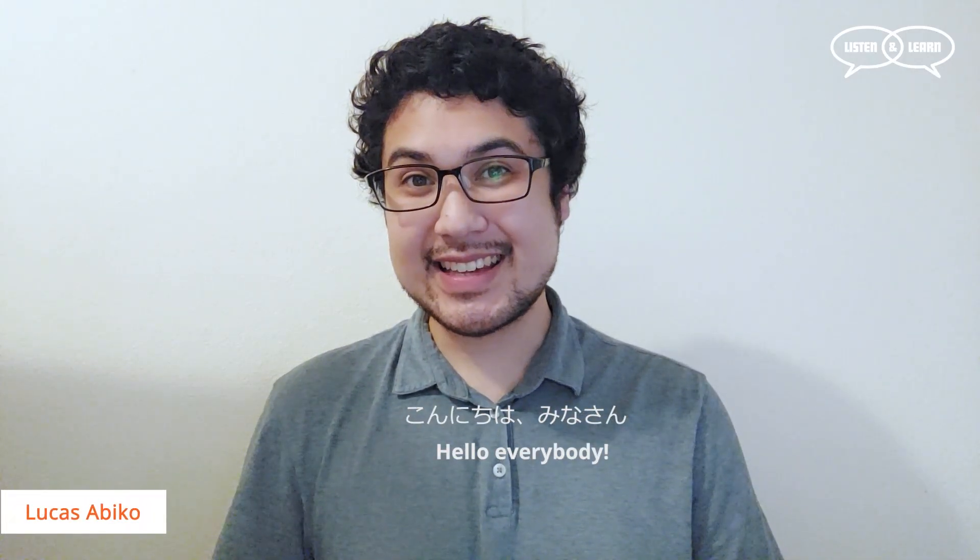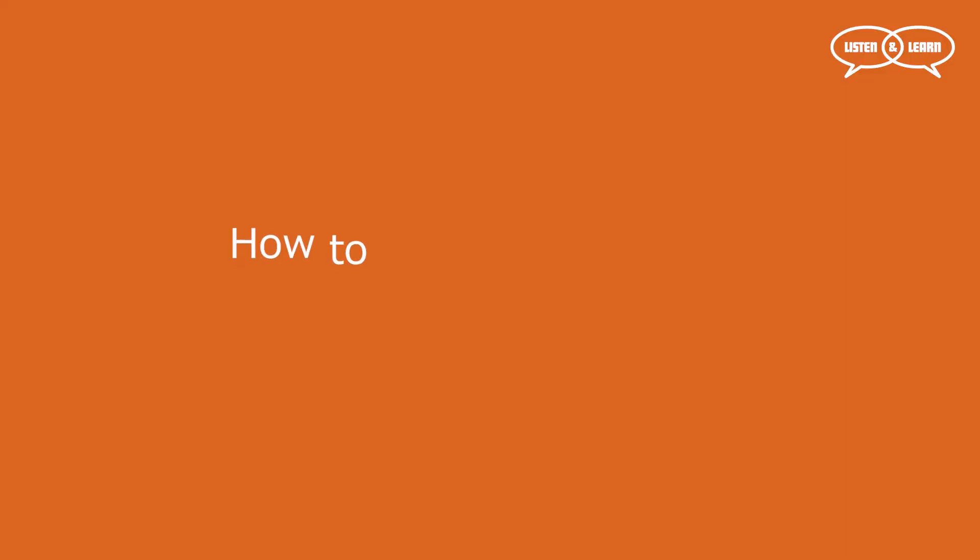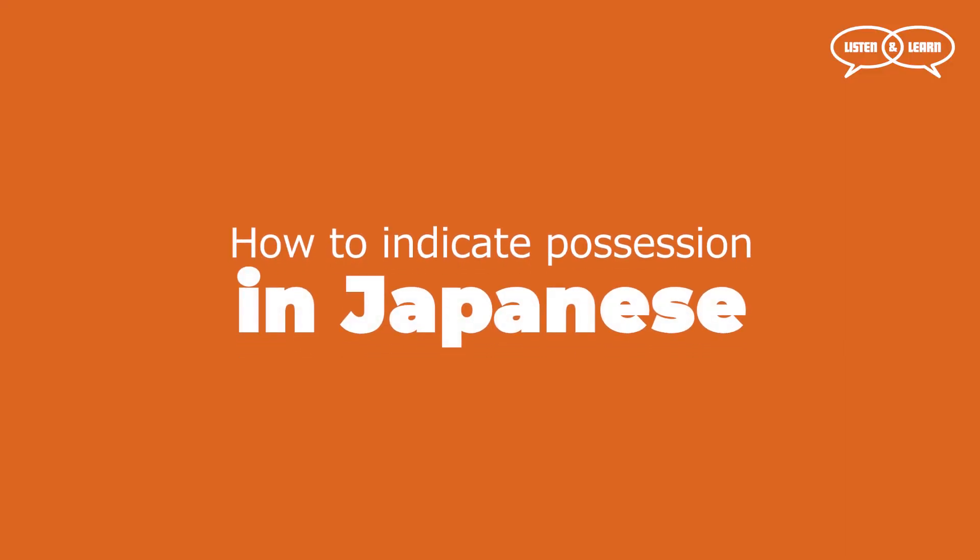Hello everybody! How are you doing? Today we're going to study how to indicate possession in Japanese. To indicate ownership in Japanese is very simple and easy to understand. But before we start, let's review the main Japanese pronouns.